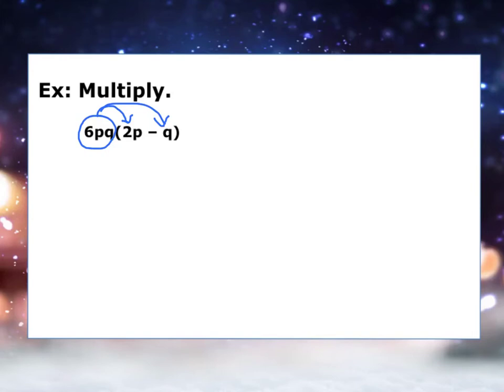Here we're going to get 12, because 6 times 2 gives us 12. Then we get p squared, because we have p and p here. We're just going to keep the q there since there's no other q with this term to combine it with.